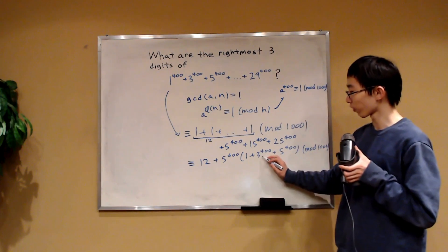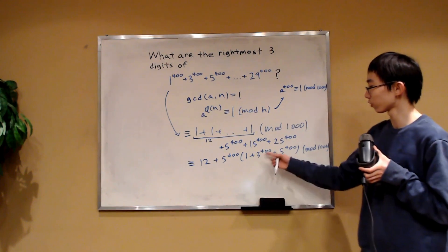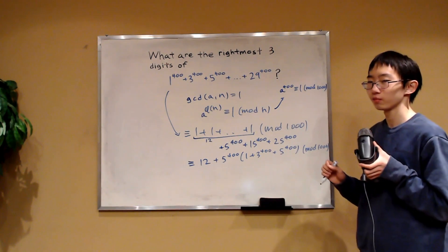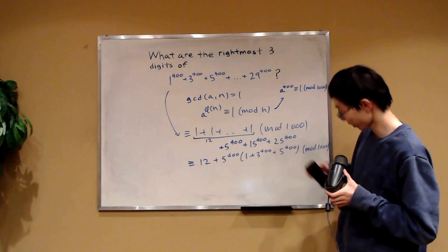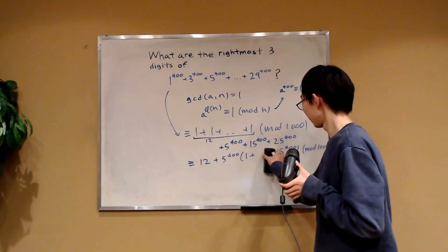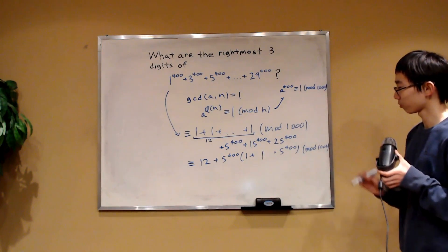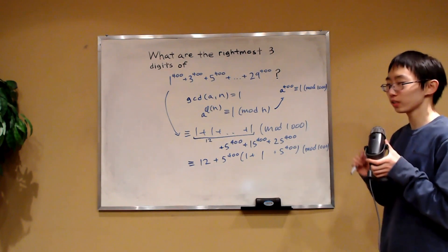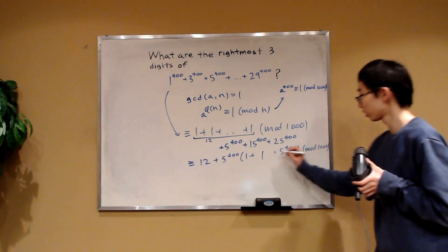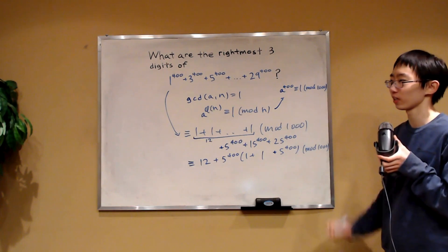Now, this 3 to the 400, notice that 3 is relatively prime to 1,000 so 3 to the 400 by Euler's theorem, that's going to be 1 mod 1,000. So this over here is just 1 mod 1,000. Now we again have a 5 to the 400 so it basically suffices to calculate 5 to the 400 mod 1,000. How do we do that?